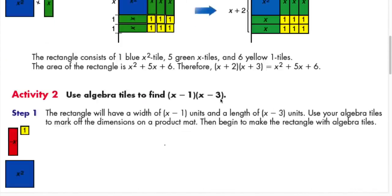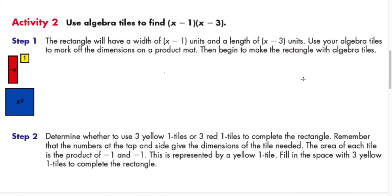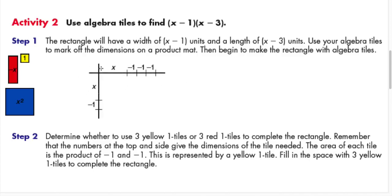Activity 2: this time we're going to multiply (x−1)(x−3). Again, the rectangle will have a width of x−1 and a length of x−3. Use your algebra tiles to mark off dimensions on the product mat, then begin to make the rectangle with algebra tiles. Step 1: this is our product mat.